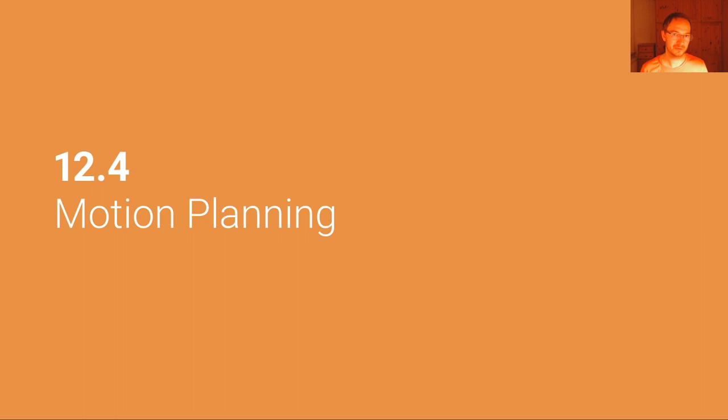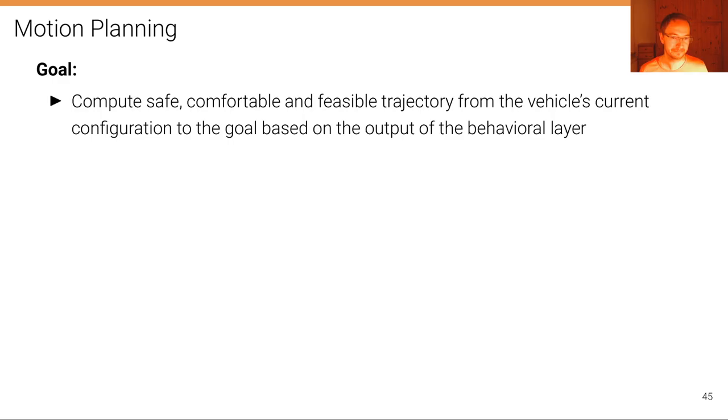Let's now move to the most fine-grained of these three planning stages, which is the motion planning stage that takes as input the instructions from the behavioral layer and produces the local plan to be followed by the controller.